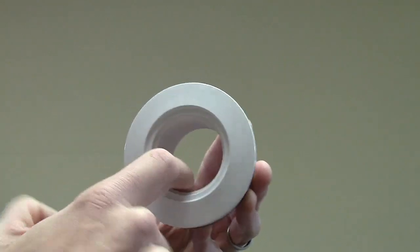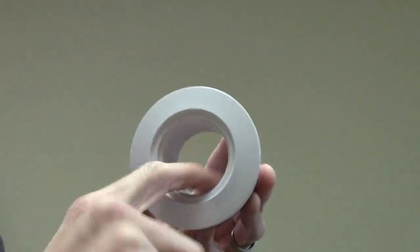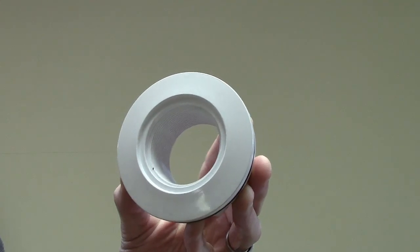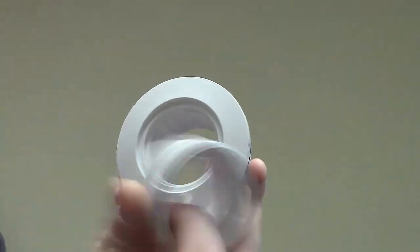Once you get this out, now you have your inside threads and this is where you're going to screw in your Polaris, your fountain, whatever you're going to attach here to your return.